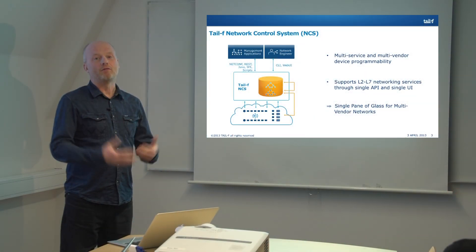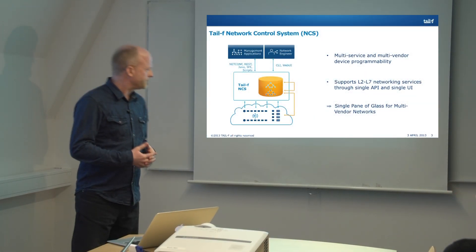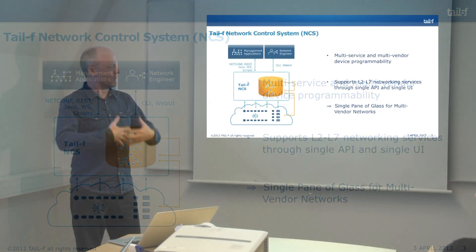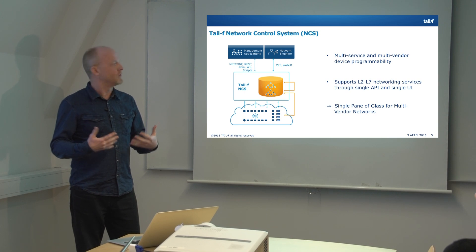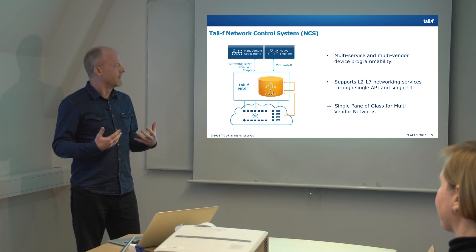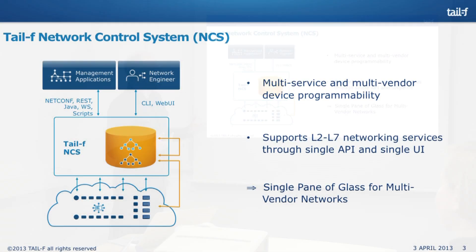Let's look at the network control system as a black box. What it provides northbound is one single pane of glass for all the services you have in the network, on all the devices from different vendors. So rather than manipulating individual devices, reconfiguring devices, providing services, you have one single point where you create services, modify services, and provision devices.